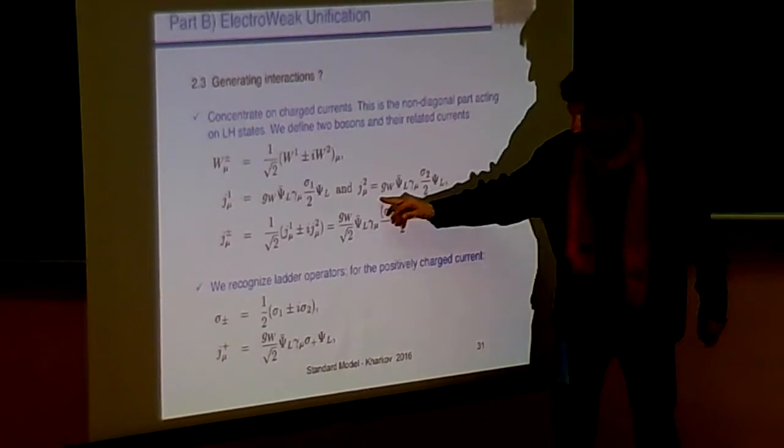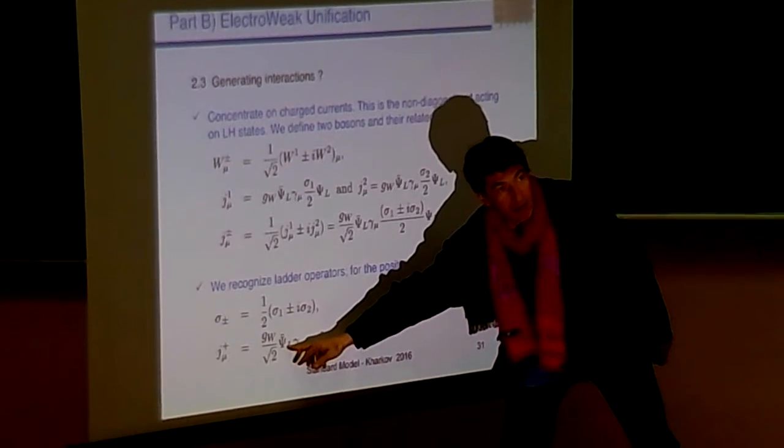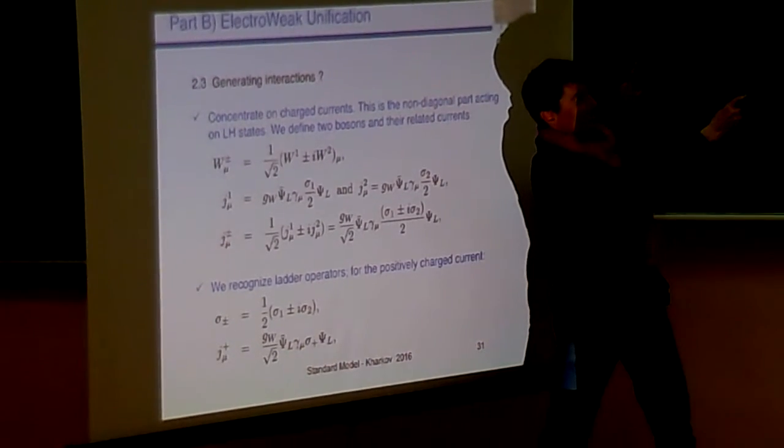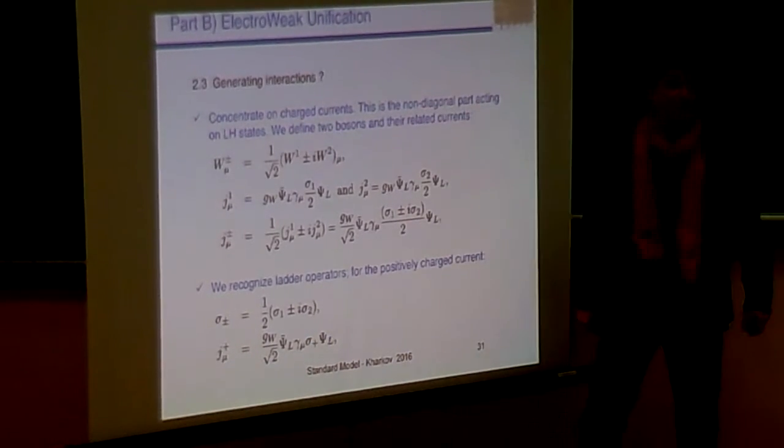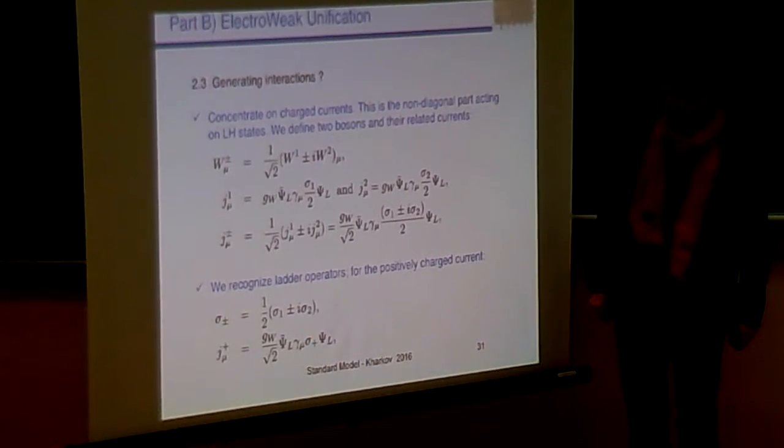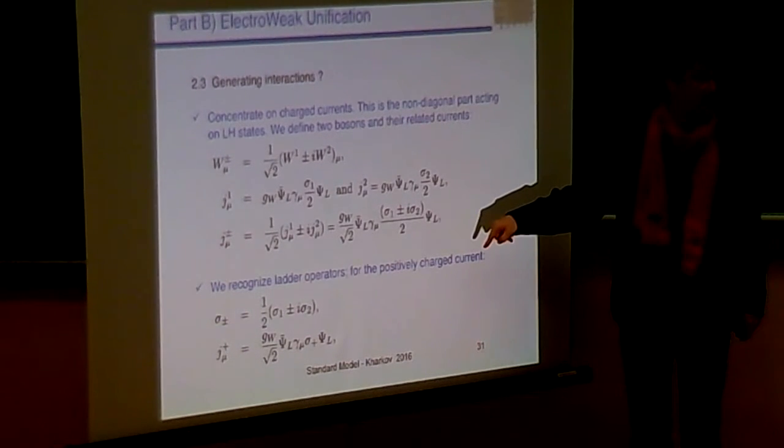So my current can be written this way: psi bar L, nu bar L, e L, psi L on this side. And you just get sigma plus on top of this. Gamma mu sigma plus.